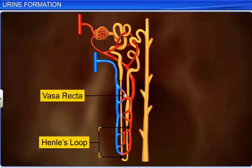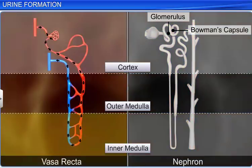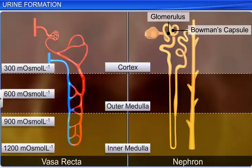A counter-current is created in both these parts, because the direction of the flow of filtrate in the two limbs of Henle's loop and the flow of blood in the two limbs of the vasa recta are opposite. The counter-current, along with the proximity of Henle's loop to the vasa recta, maintains an increasing osmolarity in the inner medullary interstitium. The osmolarity in the cortex is 300 milliosmoles per litre, while it is as high as 1200 milliosmoles per litre in the inner medulla.